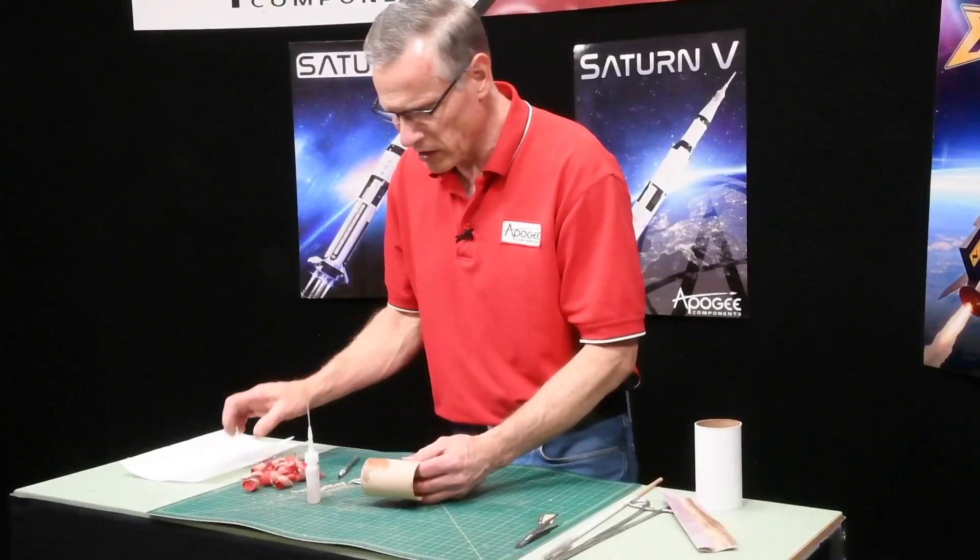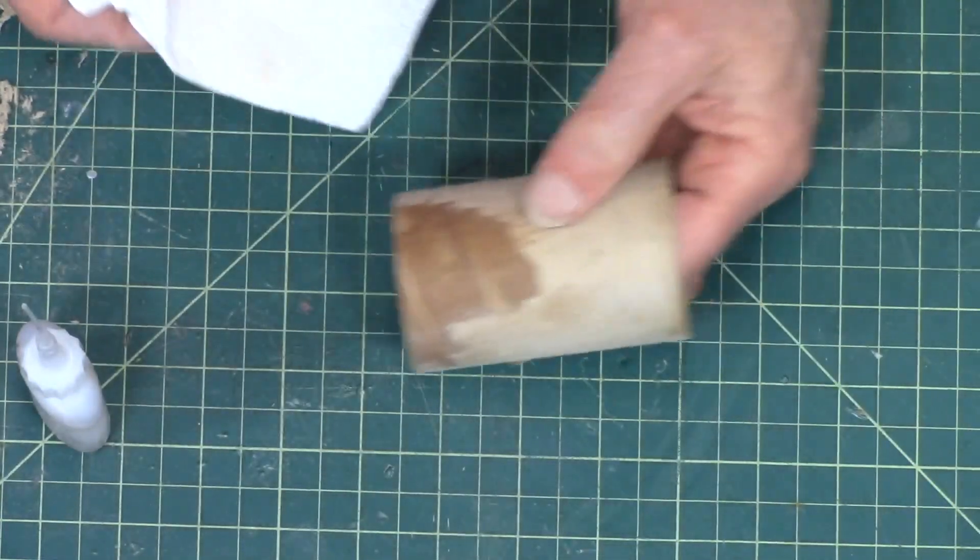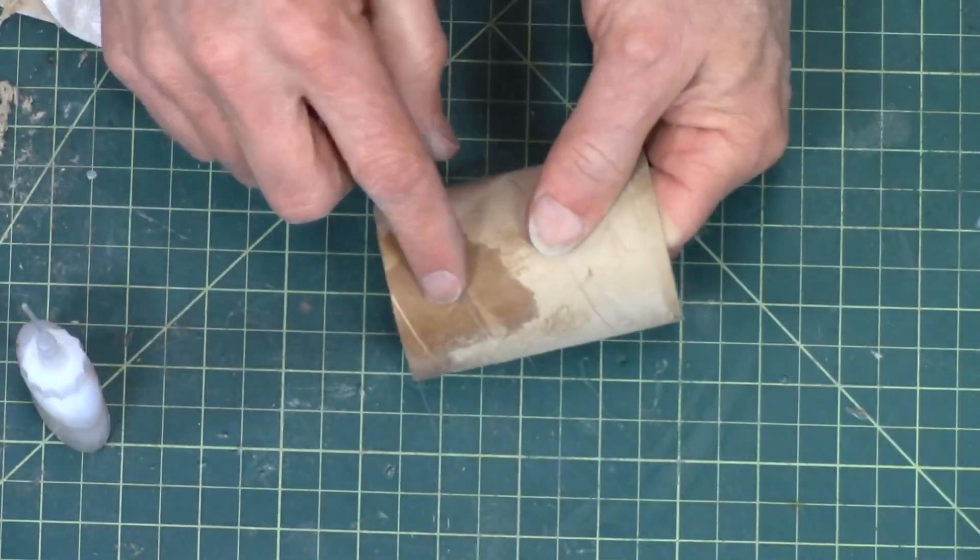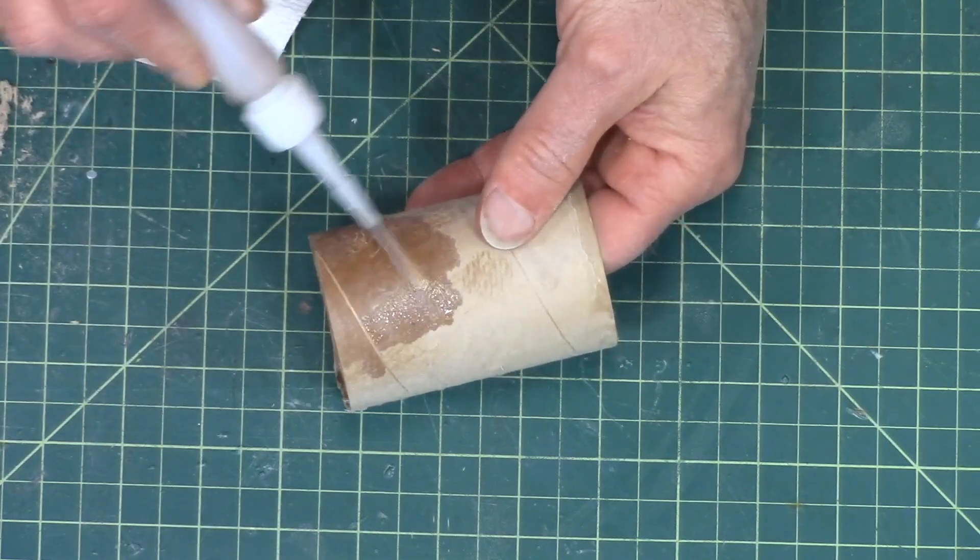And then, before it kicks off, wipe it off with a paper towel. Take off a lot of that material, so I took it off here, and it'll make it a little bit smoother and then just keep going around the tube.